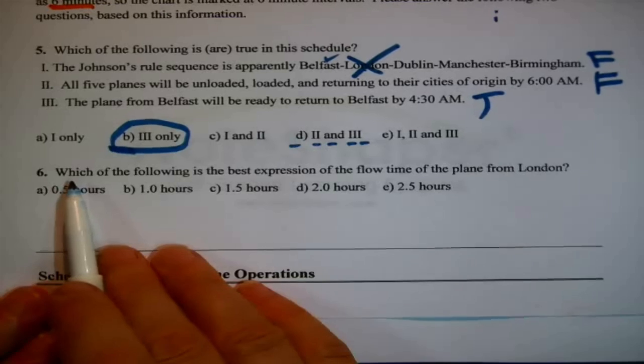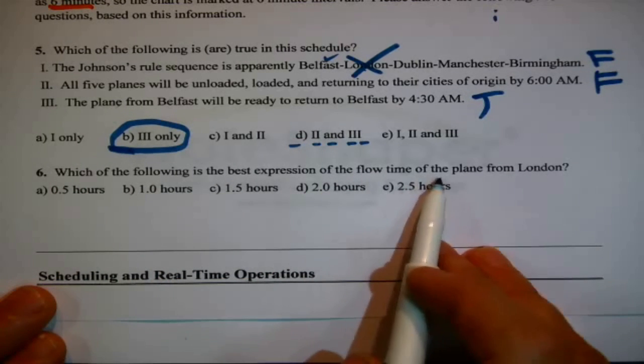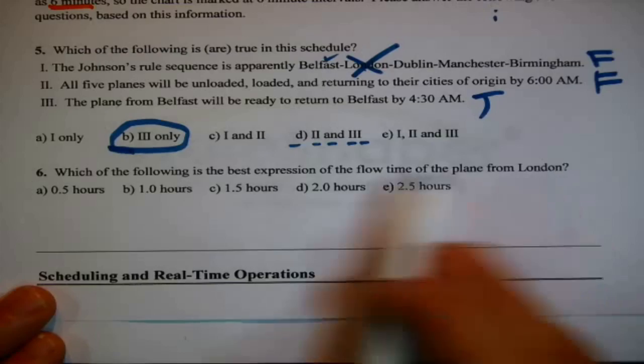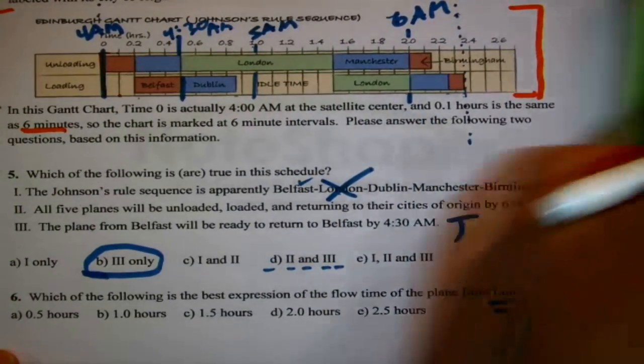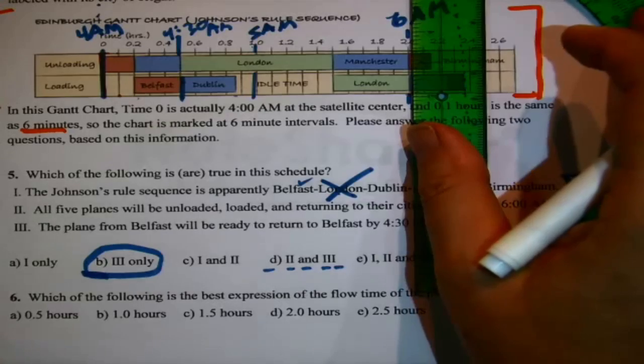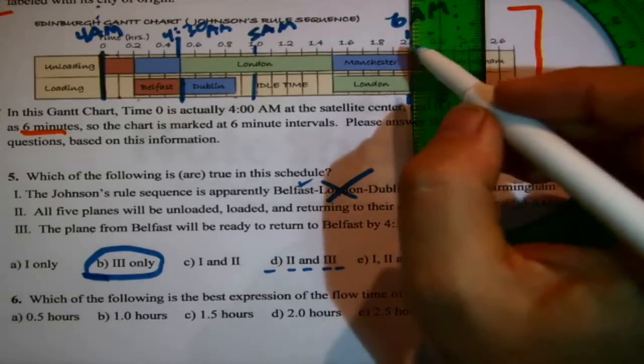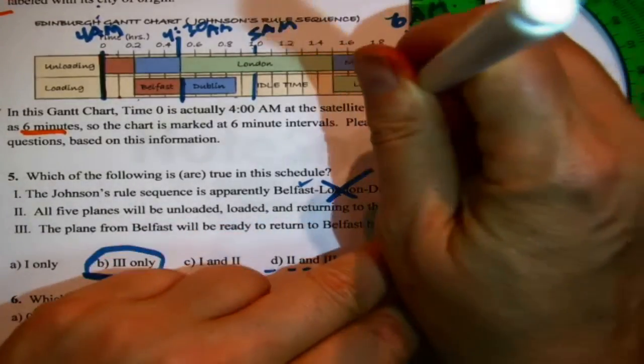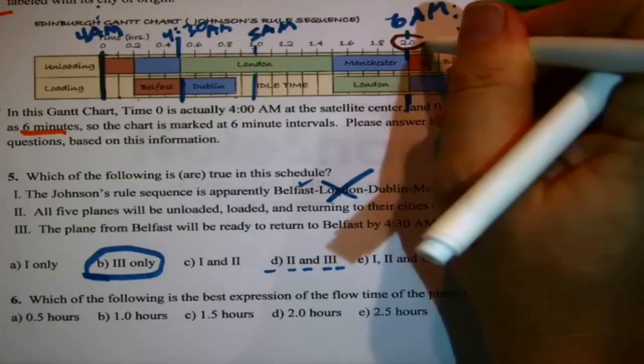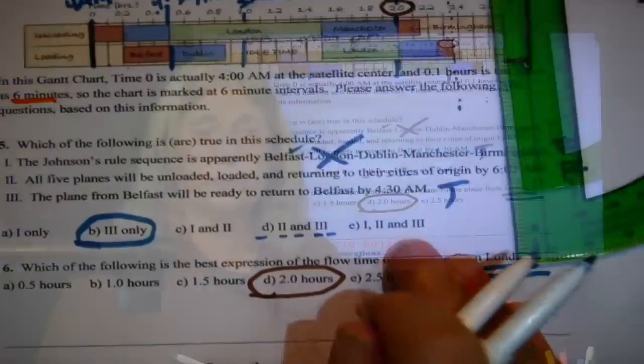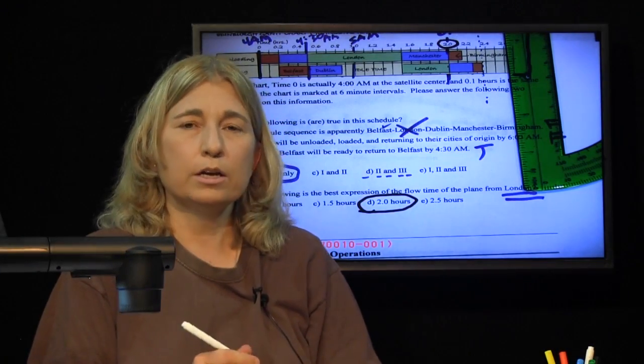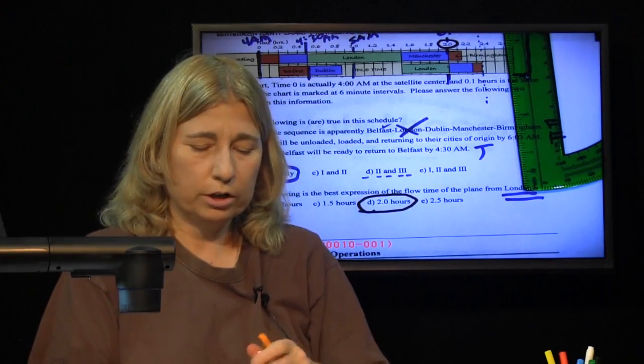Last question. Which of the following is the best expression of the flow time of the plane from London? Well, that's just something that we read off of the Gantt chart. We have to find London. Well, that's not hard. It's the big green one in the middle. And its flow time is when it ends. We were just remarking about that. We'd said that was right about 6am. But it's asking for the flow time in terms of the numerical number line, so we're back to the original numbering, which is, it looks like it's ending just two hours out. That's the answer to the question. The flight from London will be finished and ready to go in two hours.